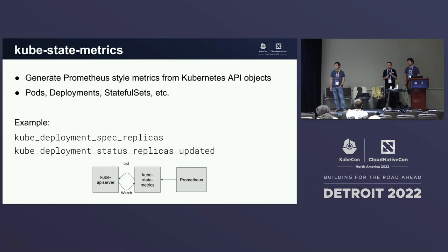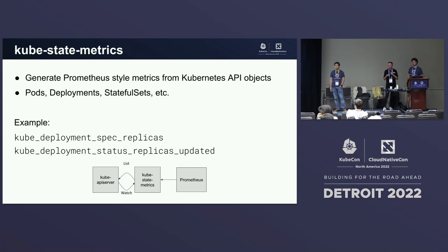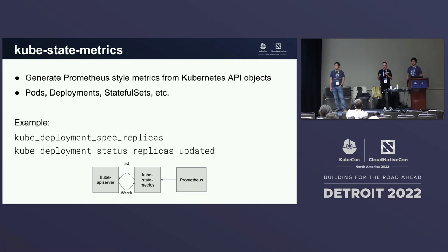Kube-state-metrics is a simple Prometheus exporter — a piece of software that converts third-party data into metrics in the Prometheus format. It gets metrics from all Kubernetes objects, since those can be quite insightful. We have metrics about pods, deployments, and stateful sets, useful for getting insights or building alerts when a deployment is failing. Kube-state-metrics watches for events on the API server, and whenever an object is created, updated, or mutated, it converts that into a metric collectable by Prometheus.